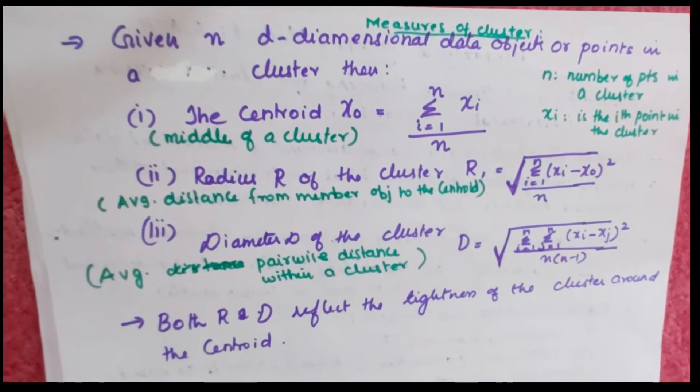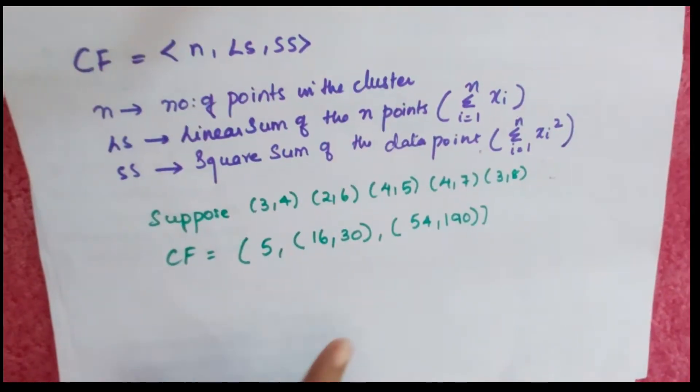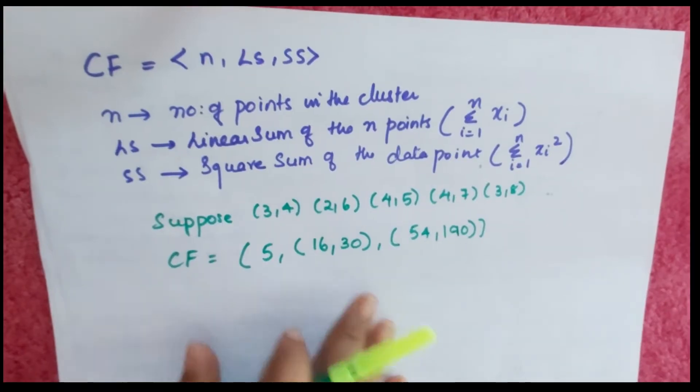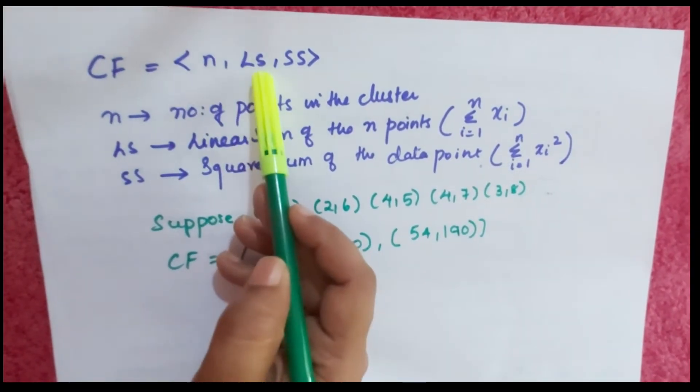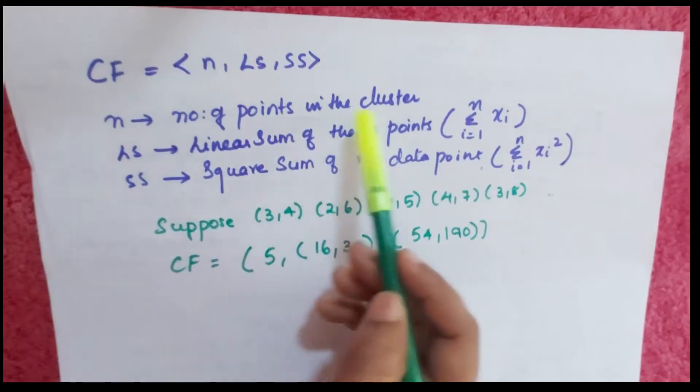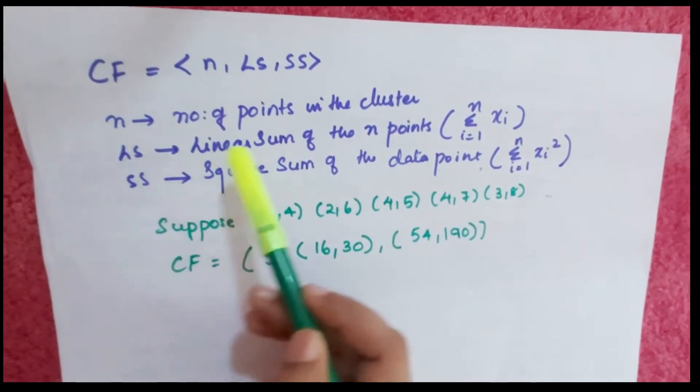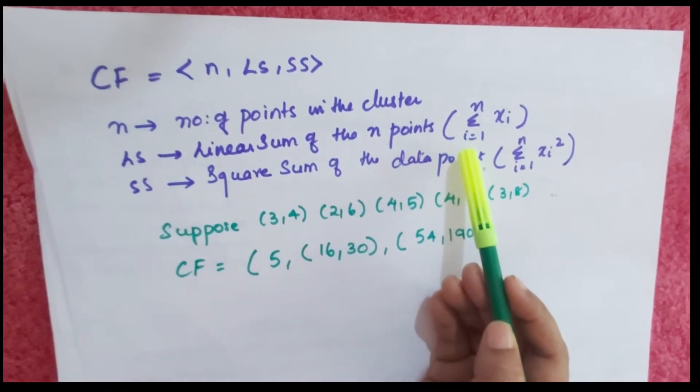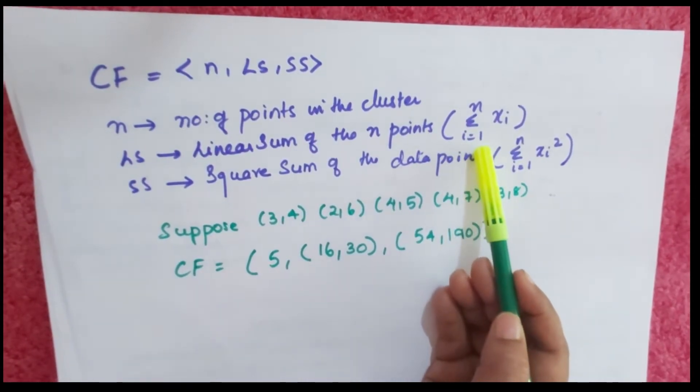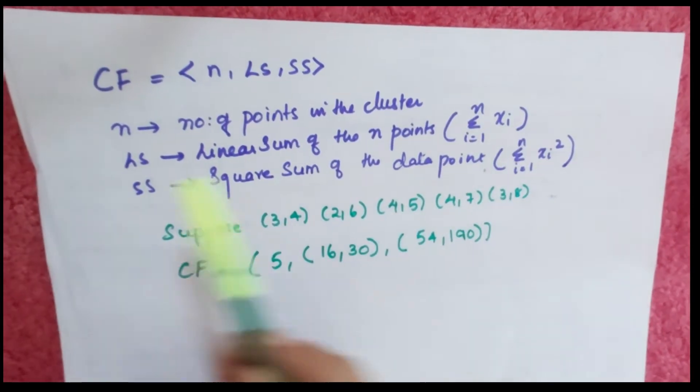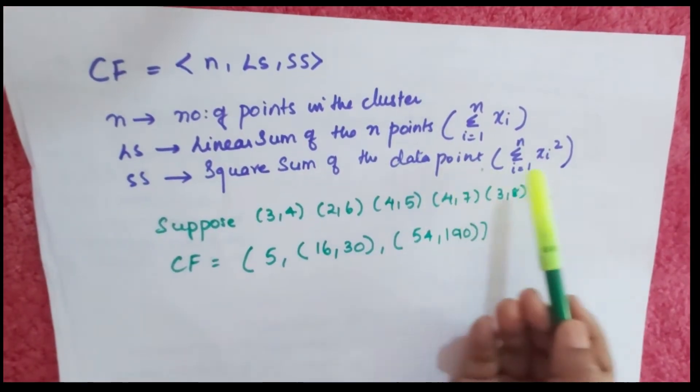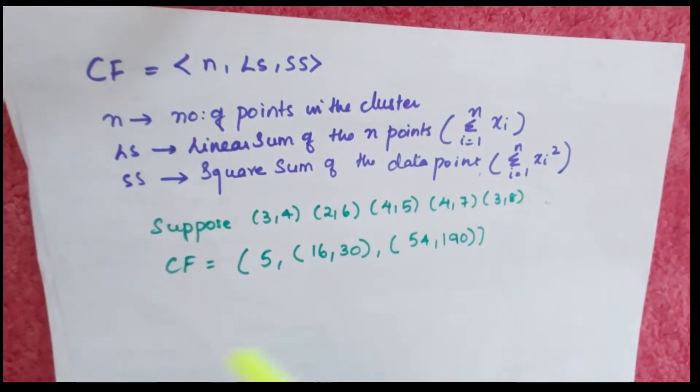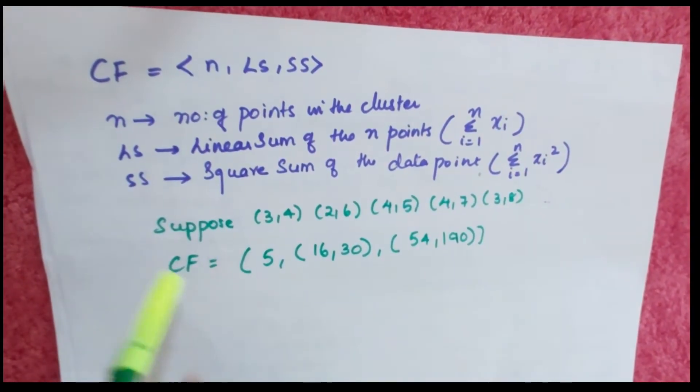The clustering feature is represented by CF = <n, LS, SS>. n is the number of points in the cluster, LS is the linear sum of n points (Σ xi), and SS is the square sum of the data points (Σ xi²).